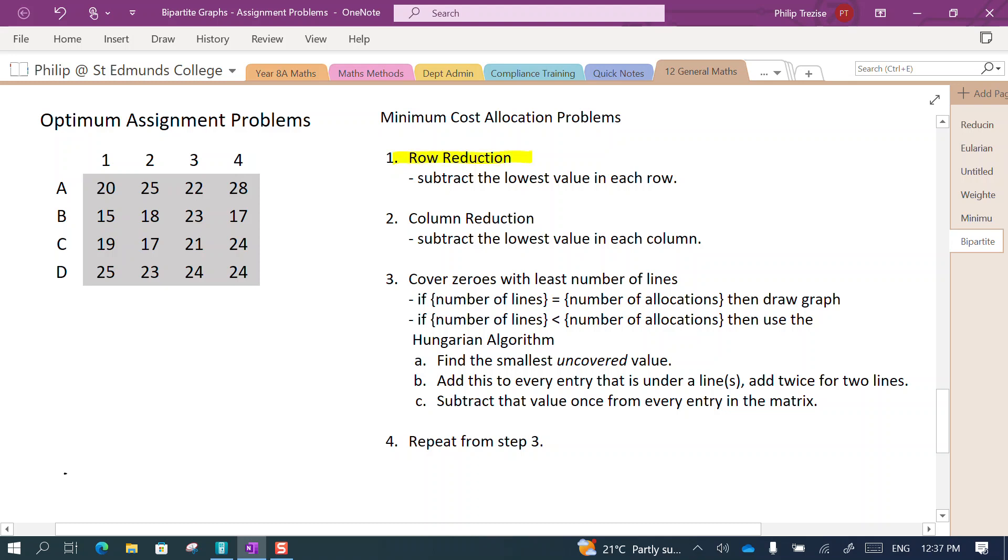As it says, subtract the lowest value in each of the rows. So go through and identify in row number one here the lowest value is the number 20. So we'll start to redraw the matrix and we'll go step by step.